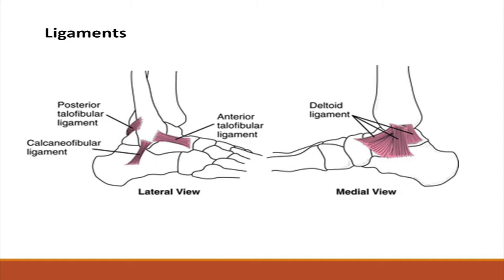The primary action of the medial ligament is to resist over-eversion of the foot. The lateral ligaments originate from the lateral malleolus. They resist over-inversion of the foot and are comprised of three distinct and separate ligaments: the anterior talofibular ligament, the posterior talofibular ligament, and the calcaneofibular ligament.